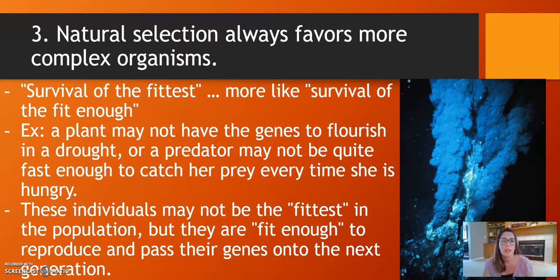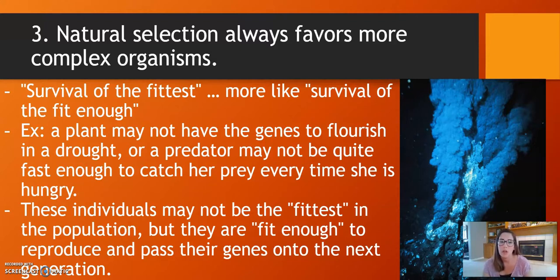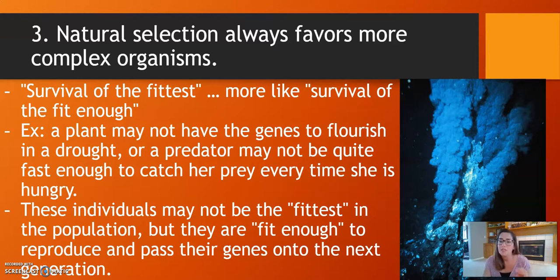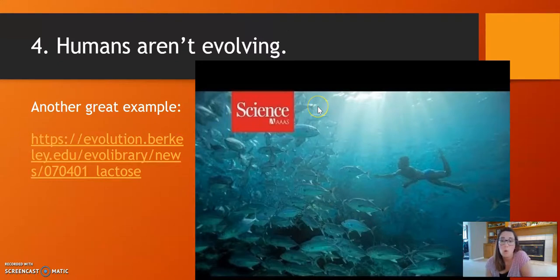Another misconception — this one's a little tricky: natural selection always favors more complex organisms. Students usually think organisms will always evolve to be better or more fit over time. It should more be like 'survival of the fit enough.' For example, a plant may not have the genes to flourish in a drought, or a predator may not be quite fast enough to catch her prey every time. These individuals might not be the fittest, but they are fit enough to reproduce and pass their genes on. A good example is bacteria at the bottom of hydrothermal vents — not strong or fast, but specific to their environment. The word 'fit' doesn't necessarily mean strongest and fastest; it means most fit for its environment.